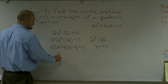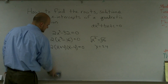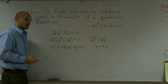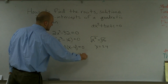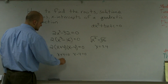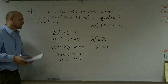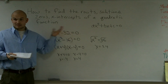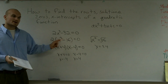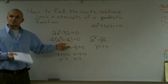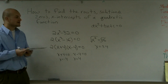When solving the problem, we use the zero product property: x plus 4 equals 0, and x minus 4 equals 0. Solving for x, you get x equals negative 4 and x equals positive 4. The main important thing is to always factor out anything you can, then look for special factors like the difference of two squares — it makes factoring much easier. That's how you find the root solution, zeros, and x-intercepts of a quadratic function.